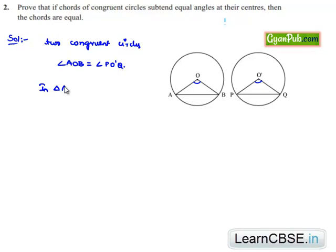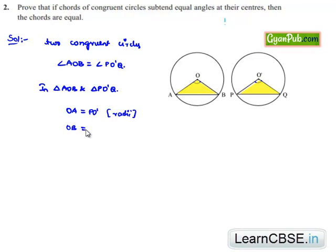In order to prove this, let us consider triangle AOB and triangle PO'Q. OA is equal to O'P, since both circles are congruent their radii will be equal, and OB is equal to O'Q — they are also radii of the circles. And it is given that angle AOB is equal to angle PO'Q.